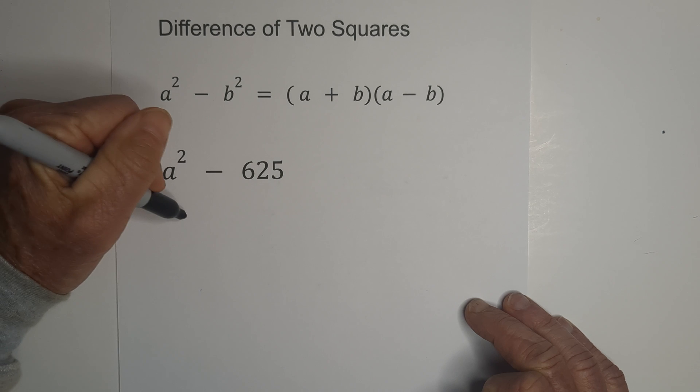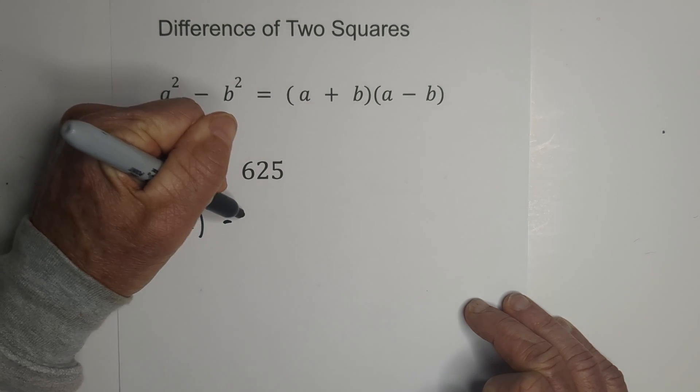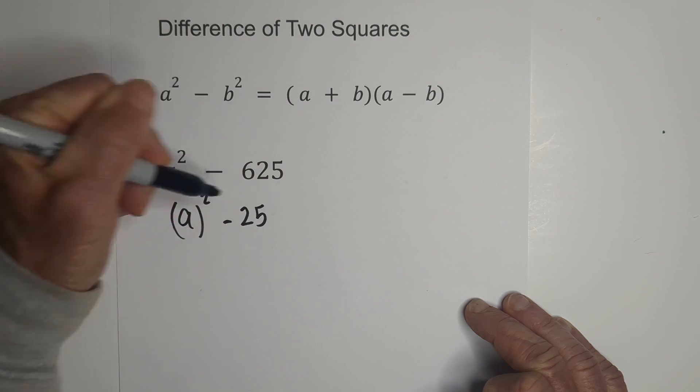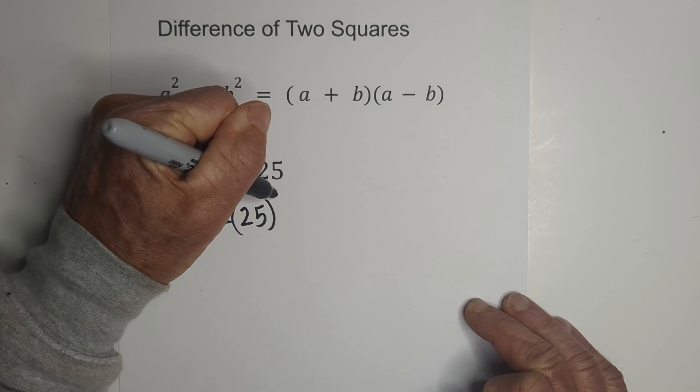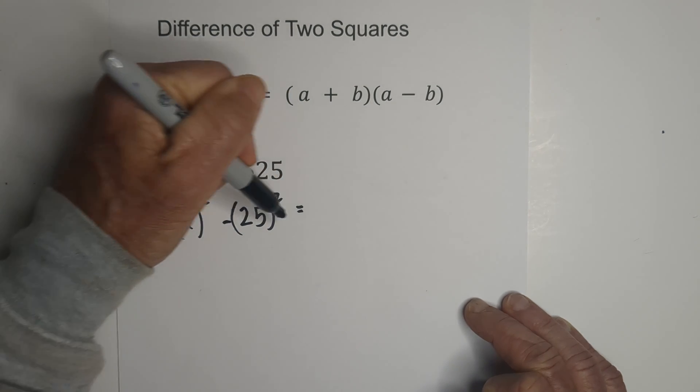So let's rewrite it. I'm going to write a and it's squared minus 25, and 25 is squared. And we can just rewrite it, a plus b.